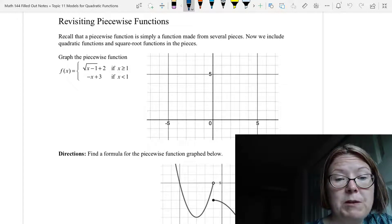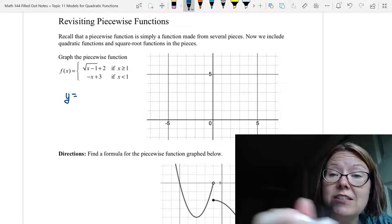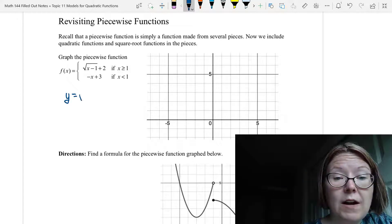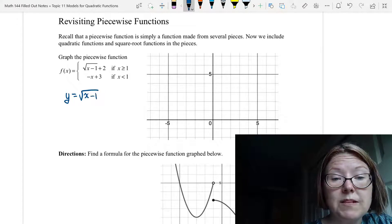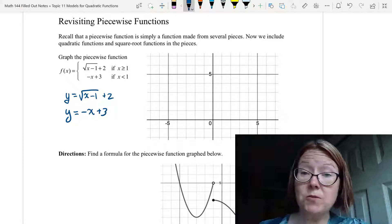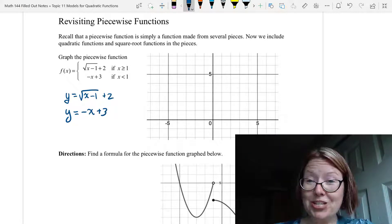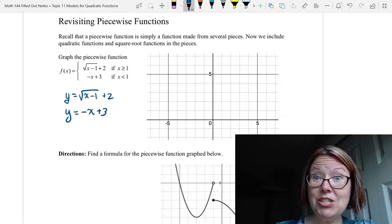Now what we need to do to graph this piecewise function is consider it as really two functions to graph: y equals the square root of (x - 1) plus 2, and y equals negative x plus 3. Once we have those graphed, we can put in the domain restrictions to see what this function looks like. Let's jump over to Desmos.